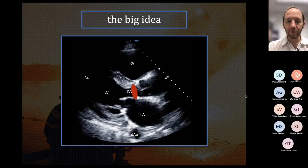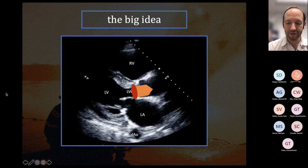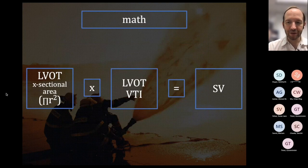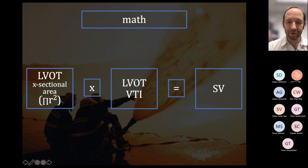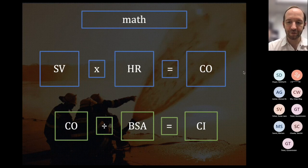The big idea is we want to look at the blood flow going out the LVOT — it's a jet of flow, and we're trying to take the area of that. What we measure is the flow across that cross-sectional area with each systolic cycle. The math is: you take the LVOT cross-sectional area (pi r squared) times the LVOT VTI, and that yields the stroke volume. Stroke volume times heart rate gives you cardiac output, and then you index that with your body surface area to derive your cardiac index.